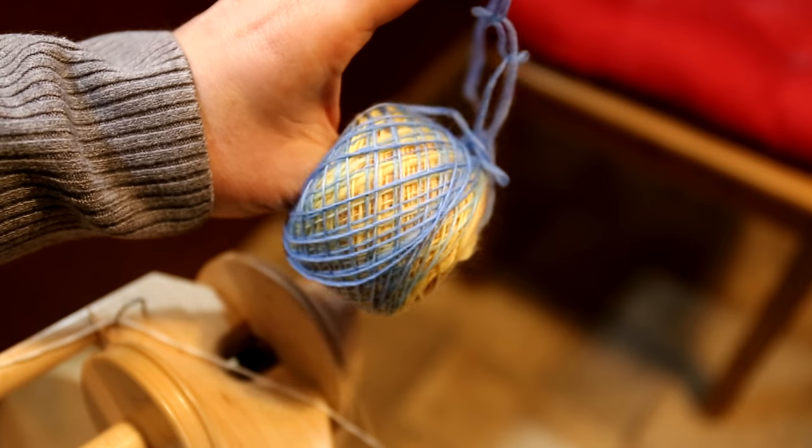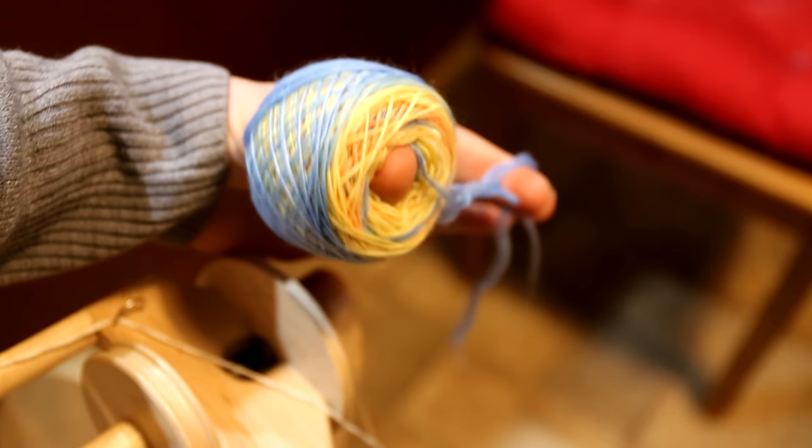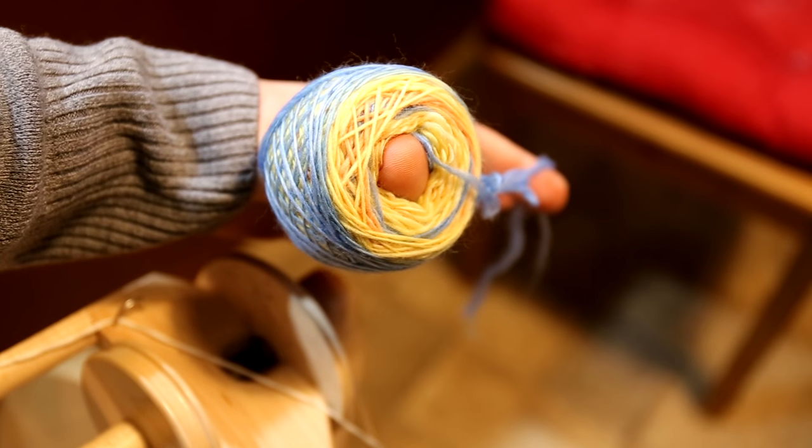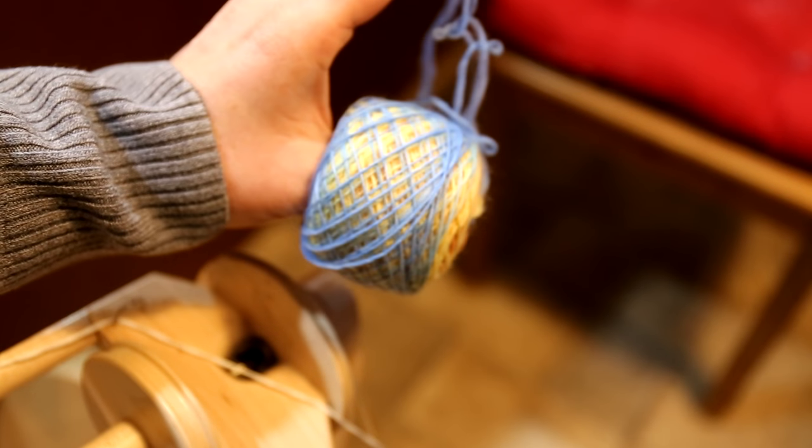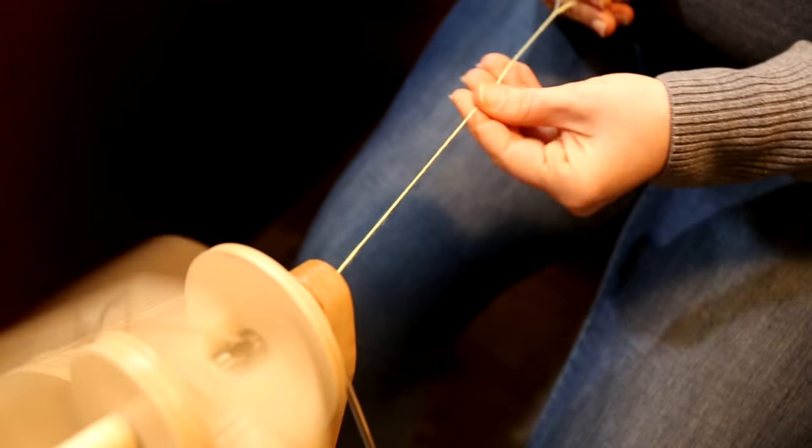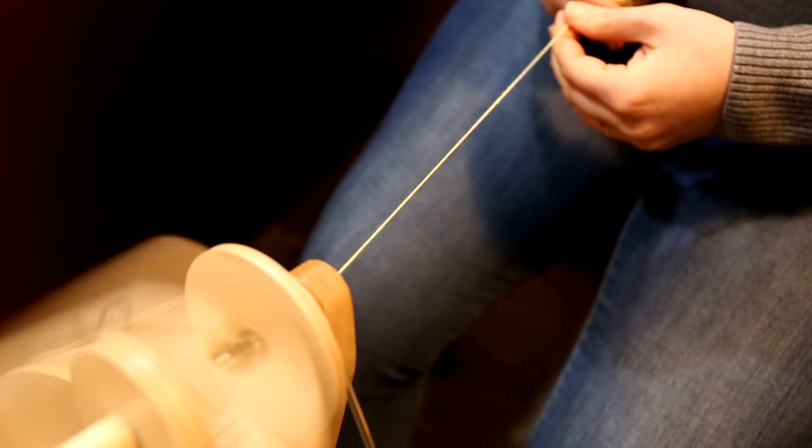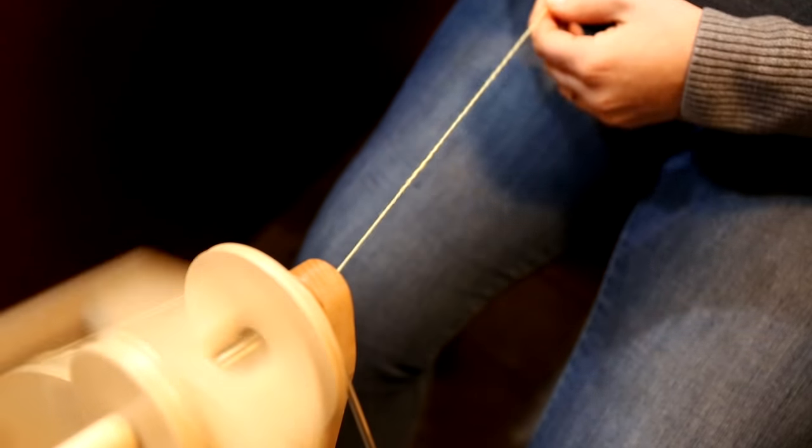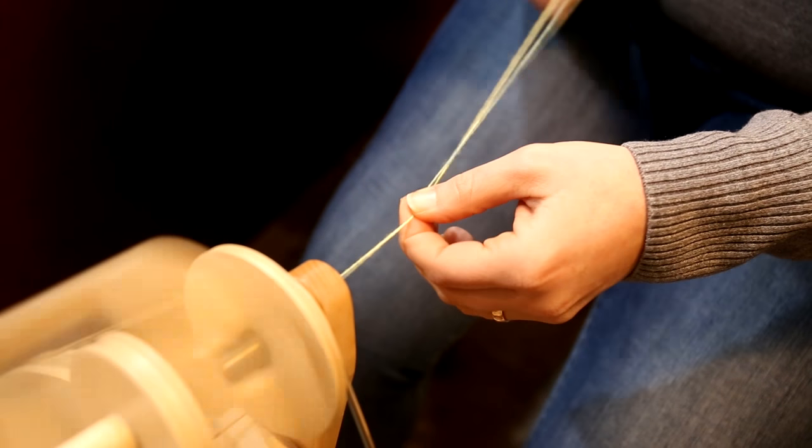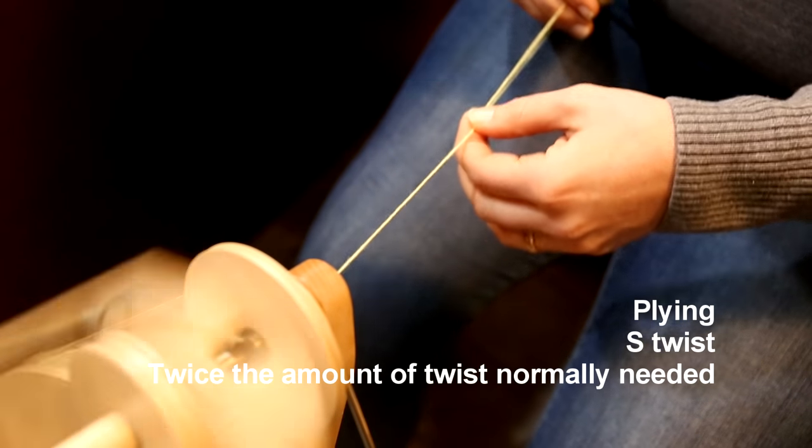Then after I spin all my singles, I wind them off into a center pull ball. You can do this by hand around your hand using a bracelet plying method, or you can use a ball winder. Then you just ply up a two-ply.